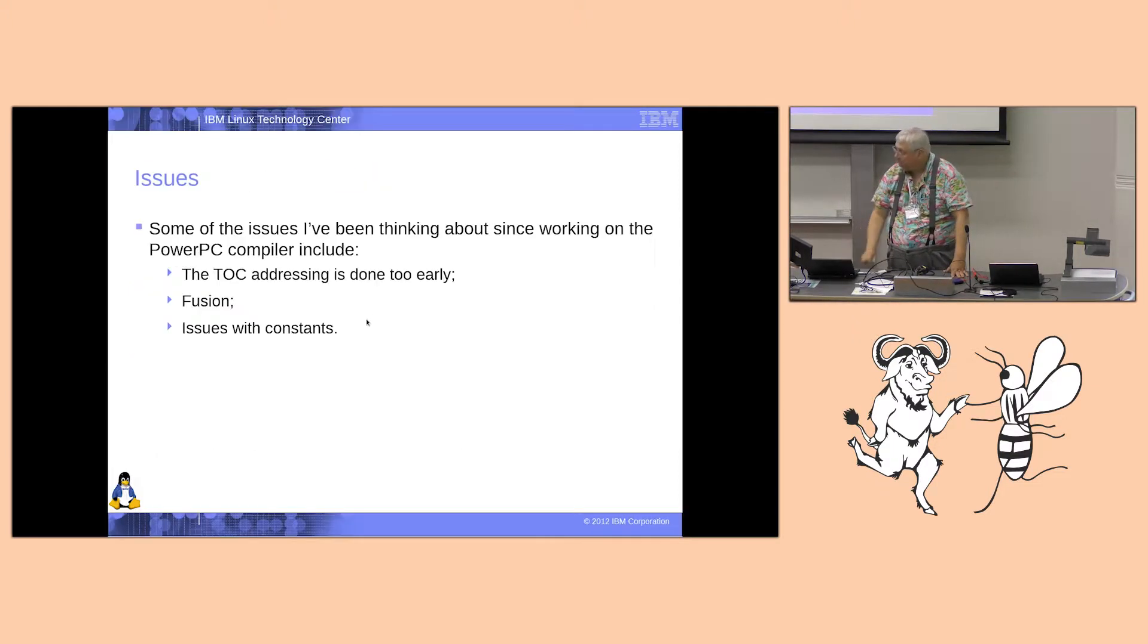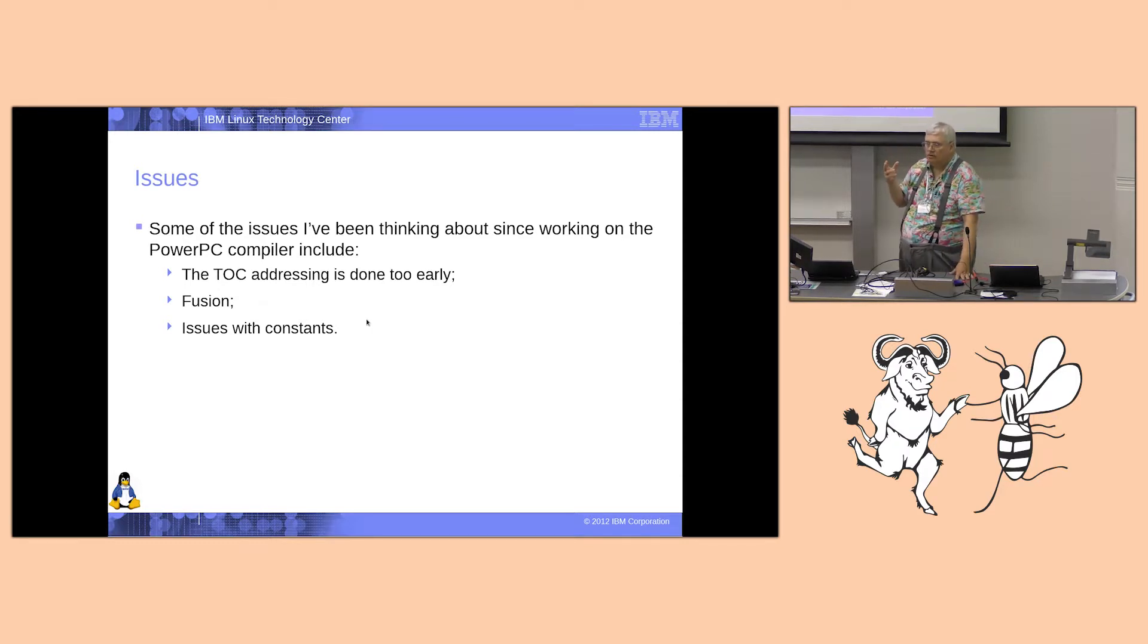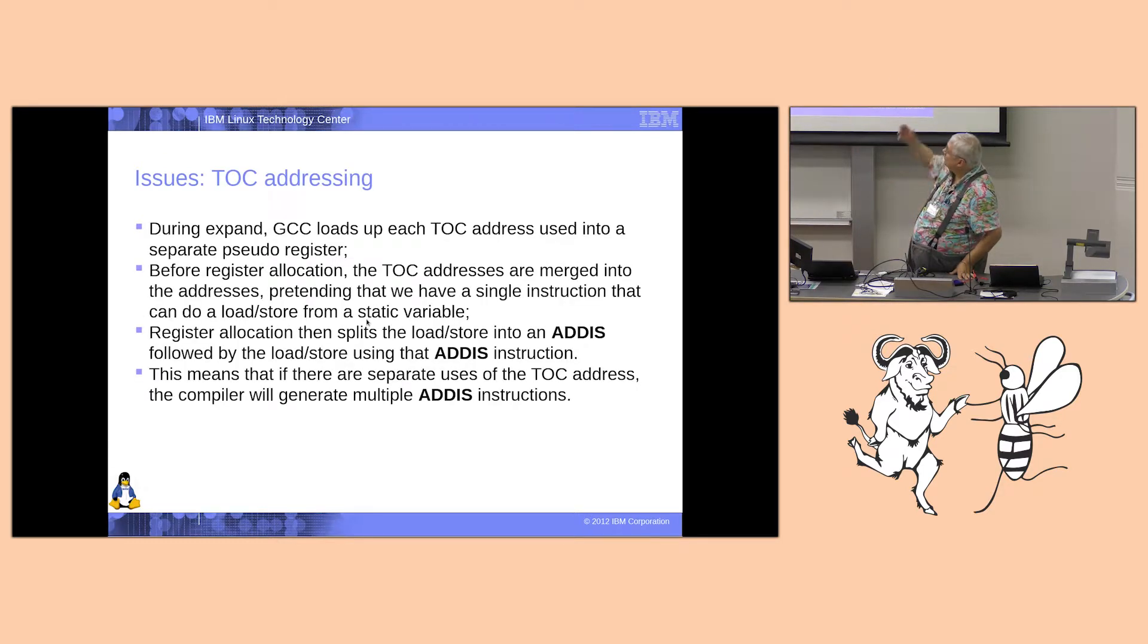My contention is, is oftentimes the TOC addressing is done too early. TOC, the register is splitting. At expand time, it knows what the legitimate address forms are. And sometimes you don't have particular address forms. And I tend to feel that it's better to believe that you have better forms of addressing before register allocation. And then after register allocation, you split it up. And fusion, of course. And then there's issues with constants. As I said, with expand, the problem is that things are done too early. Sometimes things are done too late. But in this particular case, I think that it's better to push it off to around the register allocation time, rather than early on to do it.